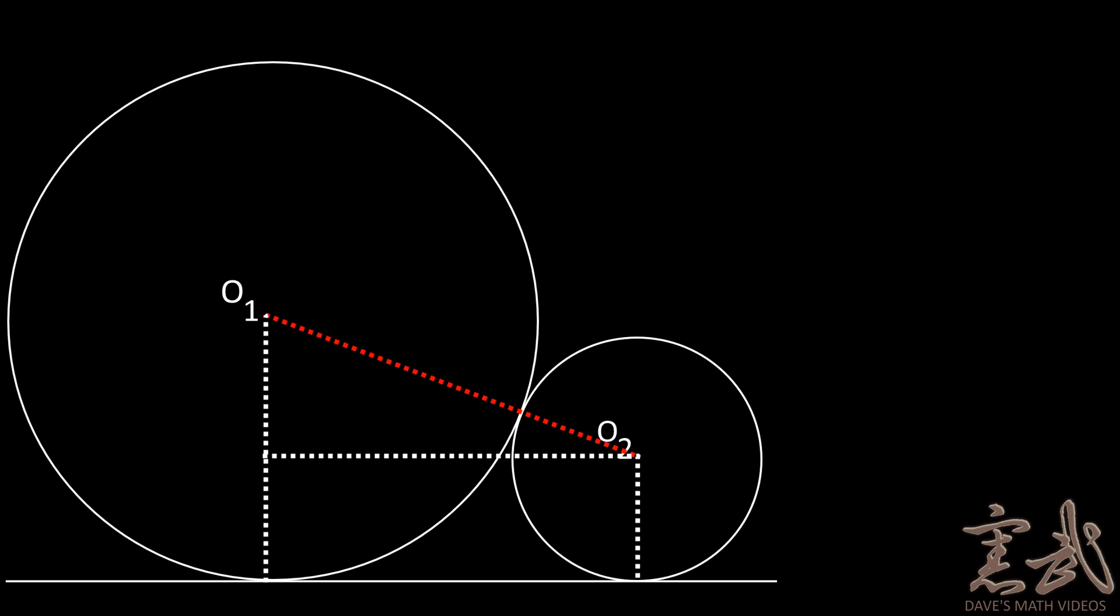So the first thing we will do to solve the case where there are two circles is to drop down a perpendicular from O1 to the baseline. And we will do the same thing for O2. We will label the points where these perpendiculars intersect as A and B respectively.